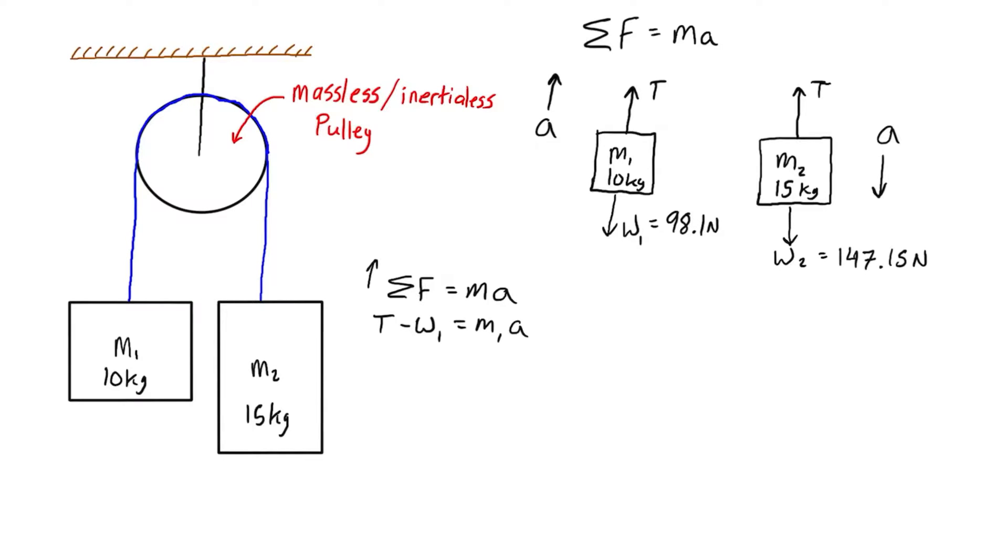Let's put tension on one side and everything else on the other, so tension equals m1·a plus w1. We can fill in these values: tension equals 10 kilograms times a plus 98.1 newtons.